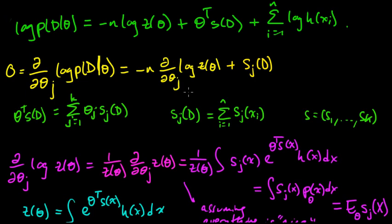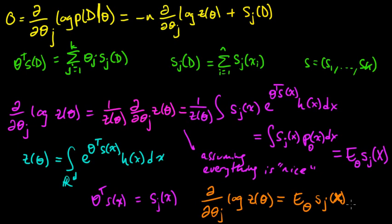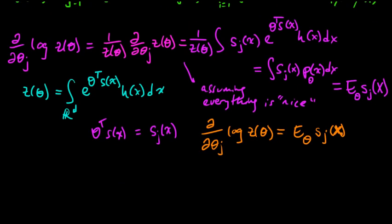And we got this, and we had to evaluate the derivative of log of z of theta, the log of the partition function. And so we were computing this thing. And it turned out that it was, beautifully, equal to the expected value under the parameter theta of the jth function s_j evaluated on the random variable x, where x is distributed according to this, our exponential family. So this is a beautiful fact.